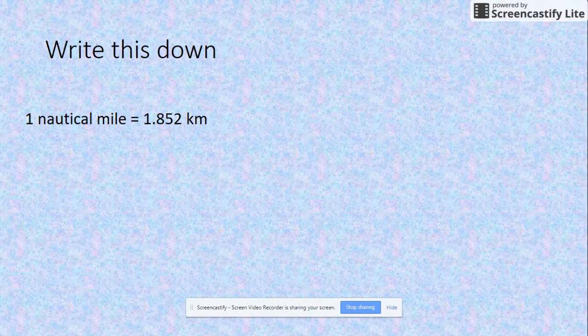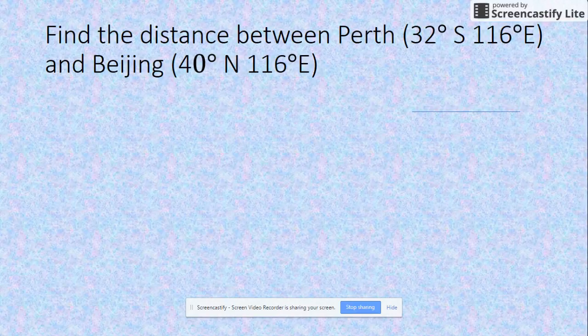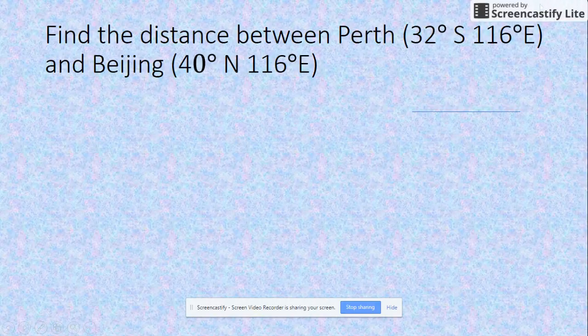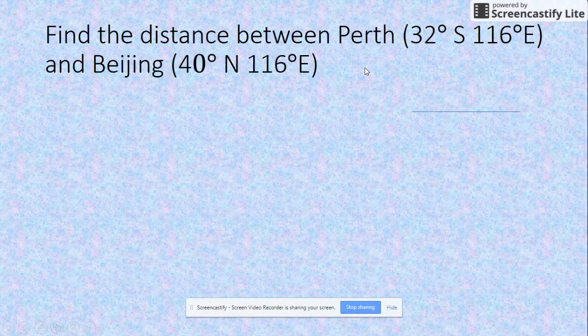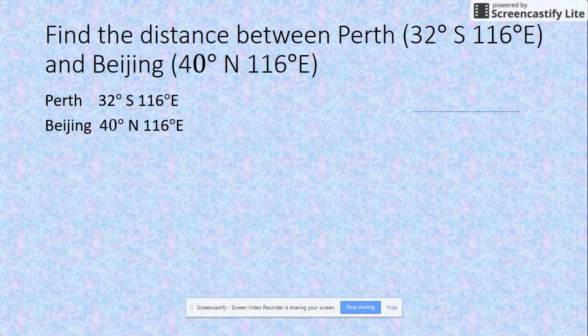The question would be: find the distance between Perth, which is 32 degrees south and 116 degrees east, and Beijing, which is 40 degrees north and 116 degrees east.